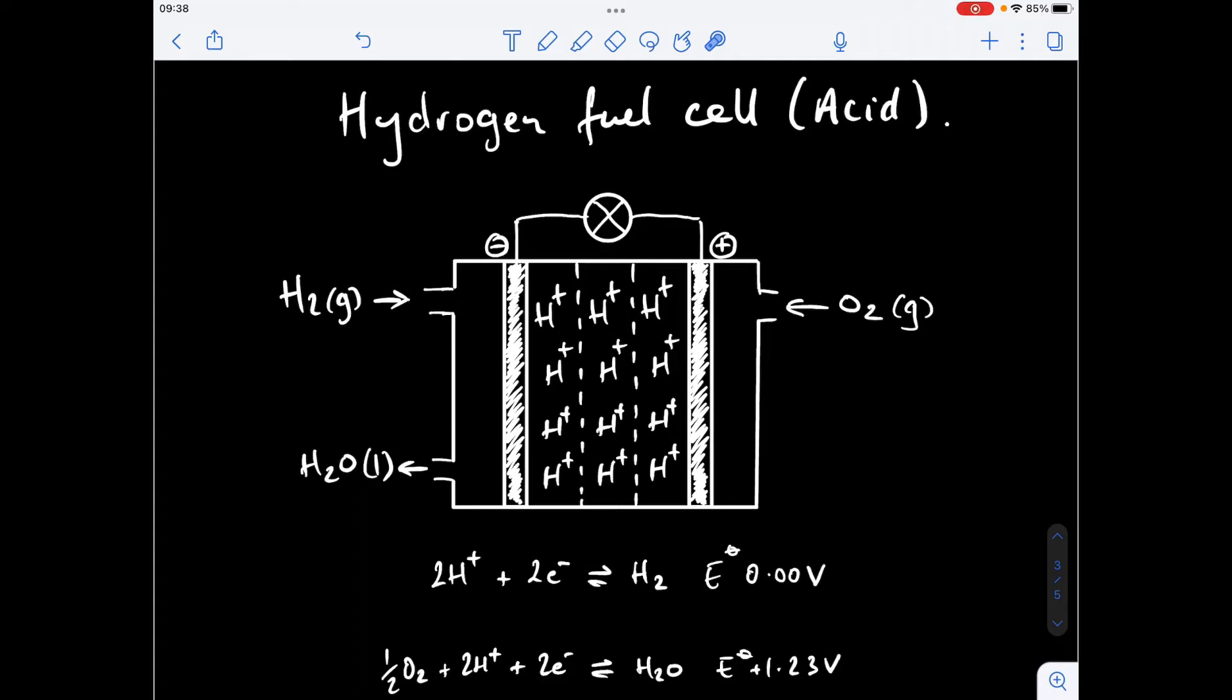I think the best place to start is to talk about these two half equations for the two half cells. We've got the hydrogen half cell which is on this side, we've got the oxygen half cell which is on this side. If you remember the significance of the standard electrode potential values, the more positive standard electrode potential will accept the electron. So in other words move in the forwards direction and also it means that it's the positive electrode.